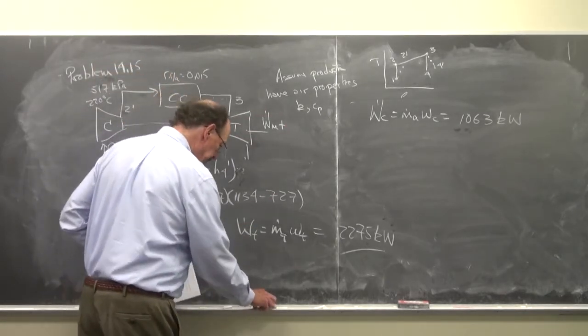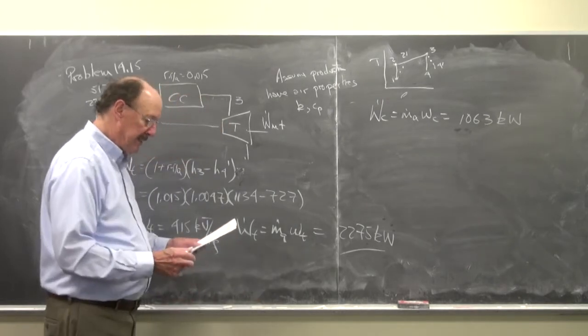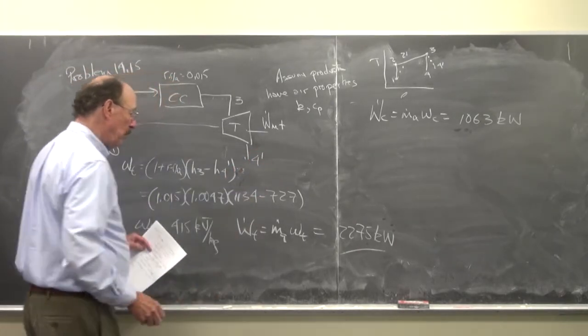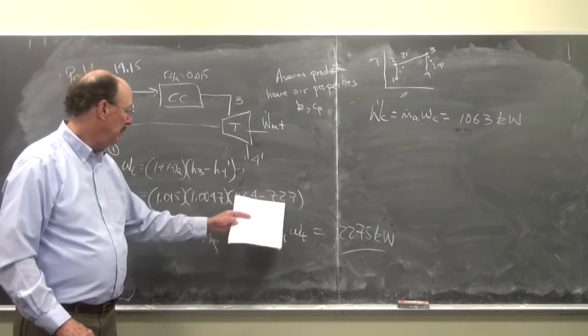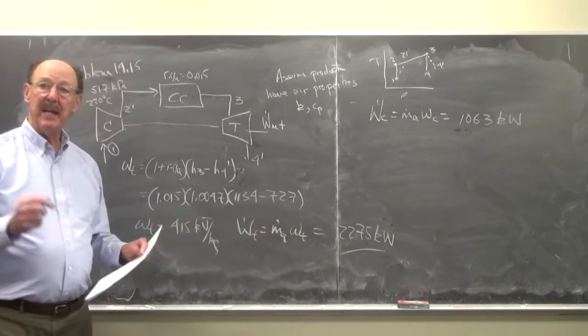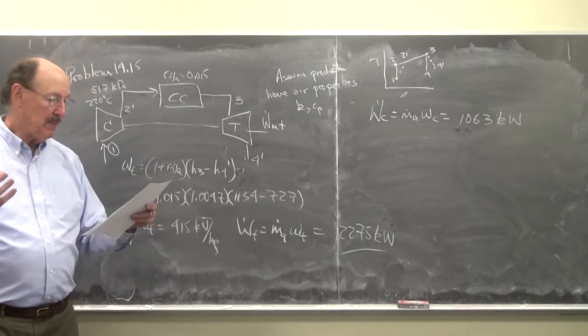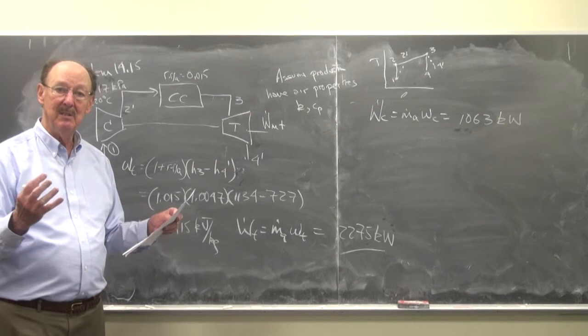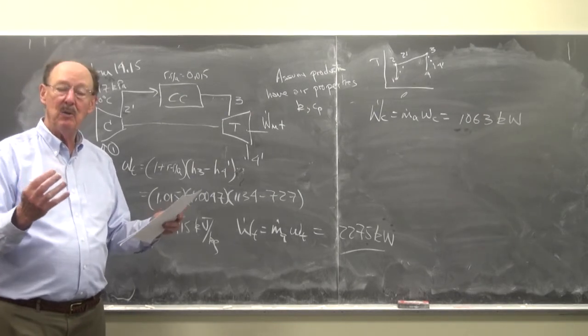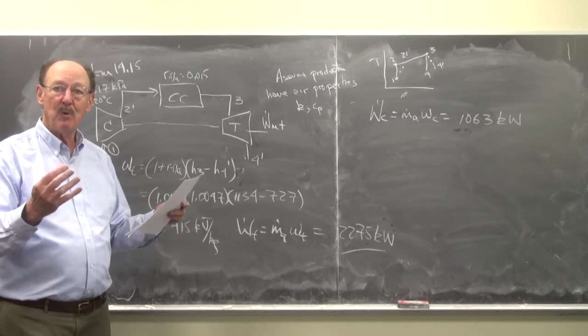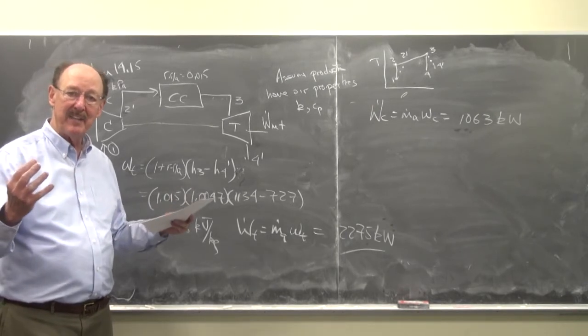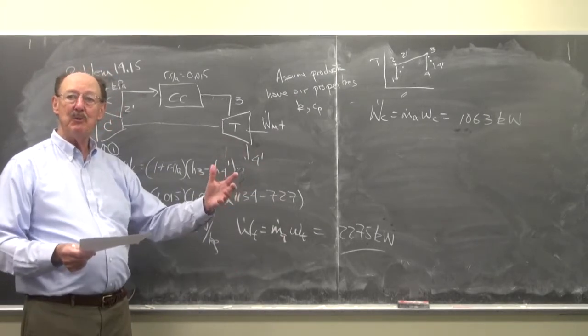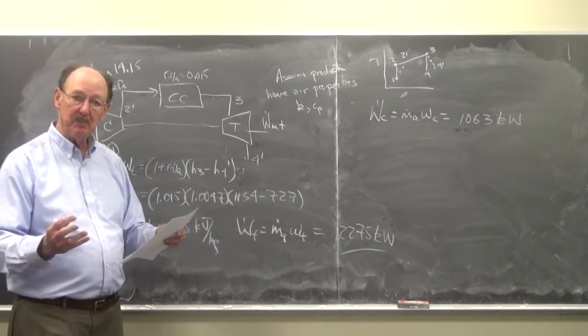And so now what I wanted to do is we found out what the exhaust temperature was. So we know what the T4 prime was. It was 727. So that's hot. So what I thought about, because I know one of the things you love the most in chapter 9, was to find out about the work potential of this. So I was curious about what is the work potential at state 4 prime. What is the work that we could get out of that, that we're dissipating, that's just going out into space. What can I do to capture that?